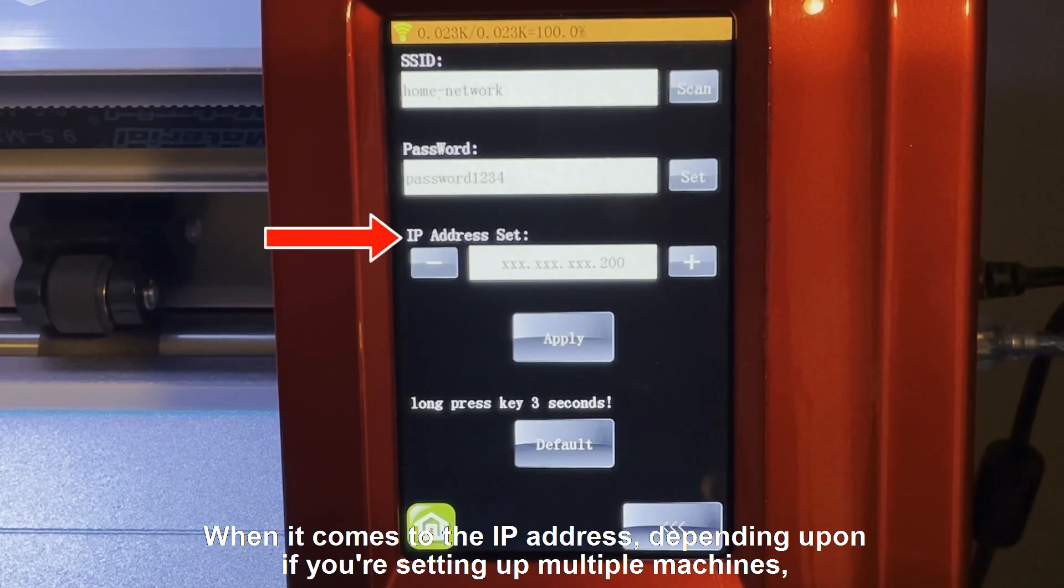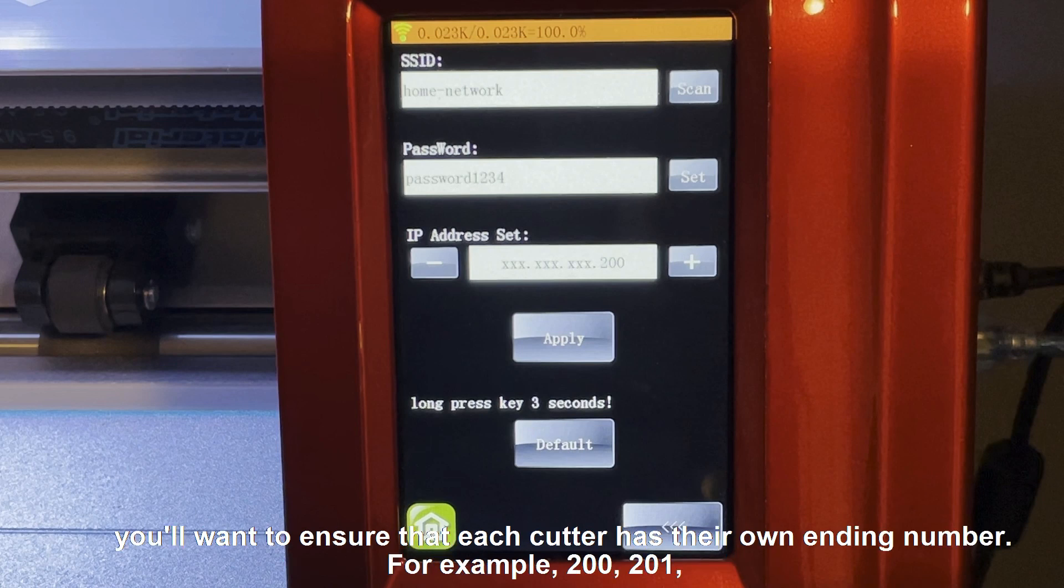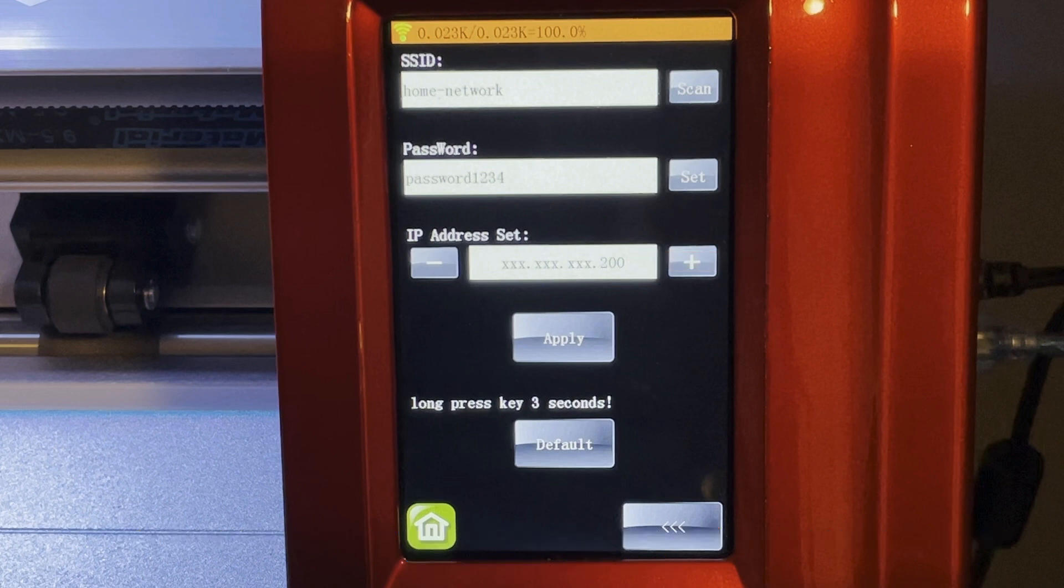When it comes to the IP address, depending upon if you're setting up multiple machines, you'll want to ensure that each cutter has their own ending number. For example, 200, 201, and so on.